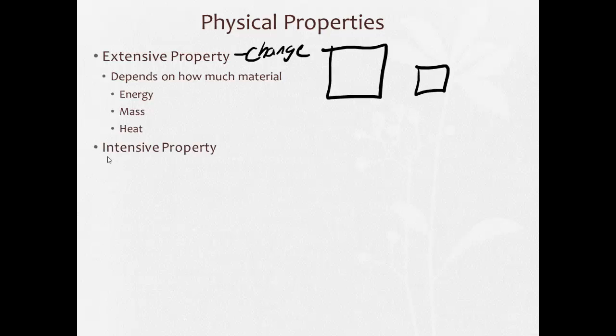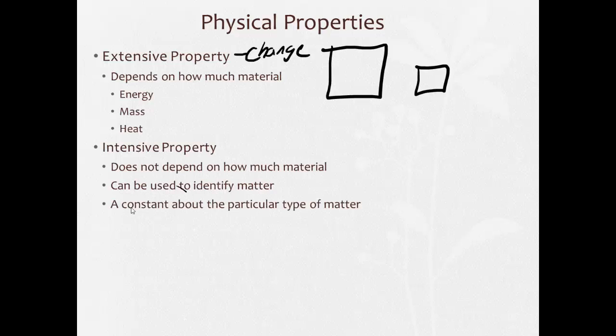On the other hand, we have what's called intensive properties. And these don't depend on how much material you have. So, since it doesn't depend on how much material you have, it can be used to identify the type of matter. So, these are a constant about the particular type of matter. So, they don't change.